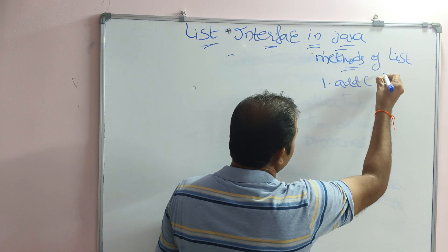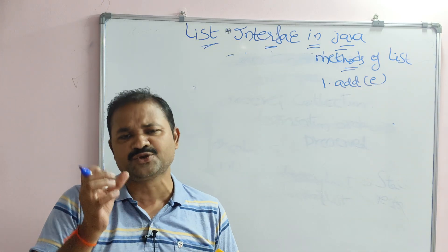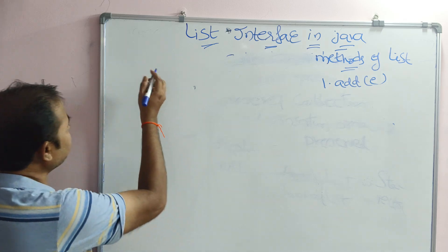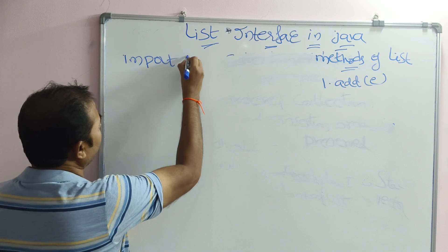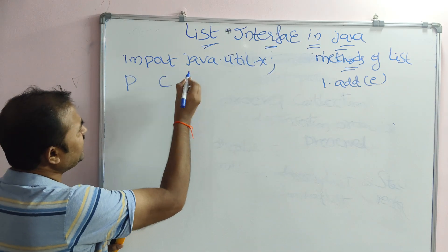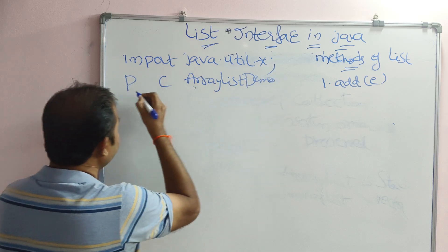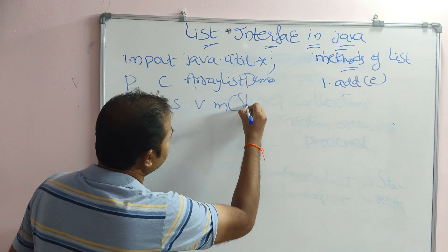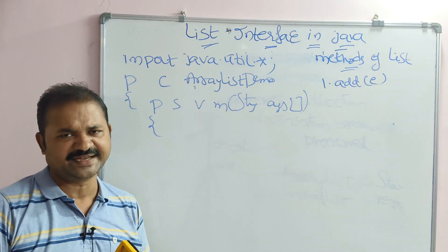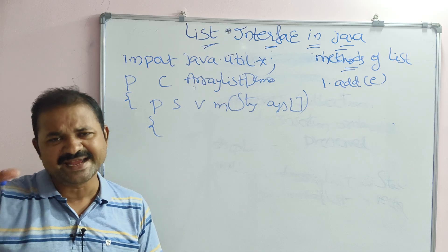The first method is the add() method — add(e) — which is used to add an element into the list. By default it inserts the element at the end. To write the example program, we first have to import java.util package, because the List interface is available in the util package. Then we declare: public class ArrayListDemo, with public static void main(String[] args).